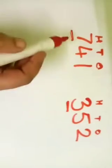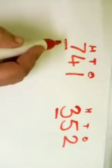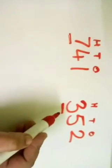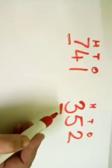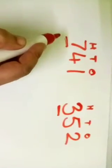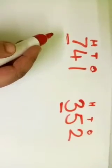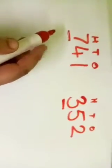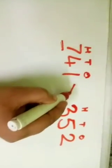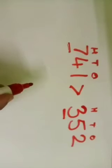When you are comparing the 100 digits, here is 7 and here is 3. Obviously 7 is greater than 3. So, 741 is the greater number. We have to put the crocodile mouth open here.